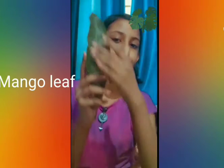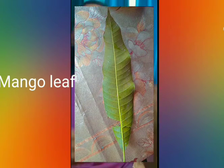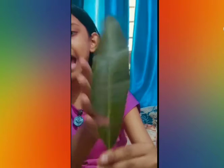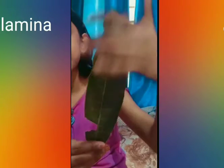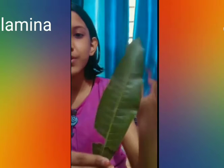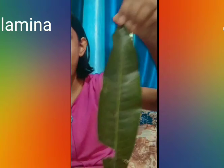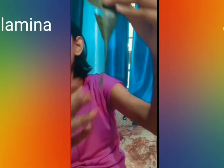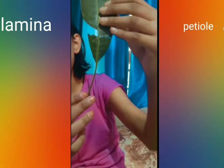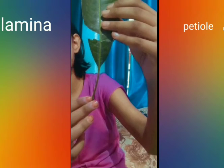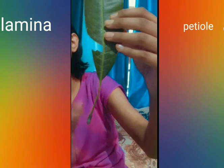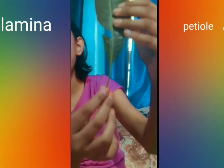This is a mango leaf. This broad, flat part of a leaf is called the lamina. Different types of plants have different shaped laminas. The lamina receives solar radiation which is used during photosynthesis. The lamina is attached to the stem with the help of a small stalk called the petiole.